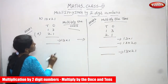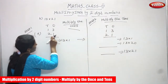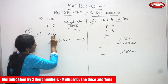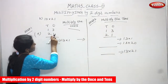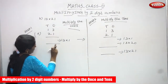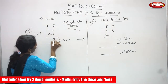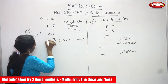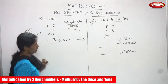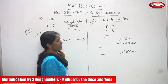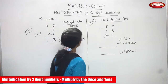Step 1: 13 is going to multiply by 1, because this 1 is in the ones place. So 13 into 1 — you have to multiply. 1 times 3 is 3, and 1 times 1 is 1. So Step 1, multiplying by the ones, is over. Now we are going to do multiplying the tens.